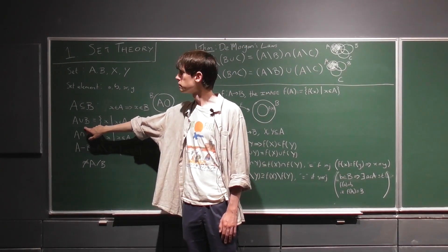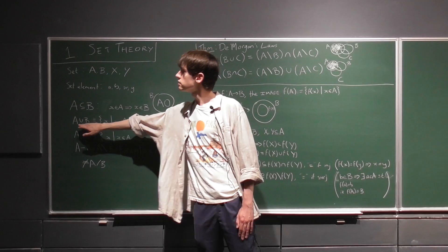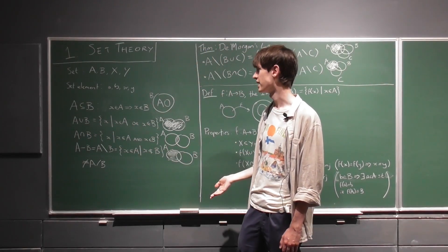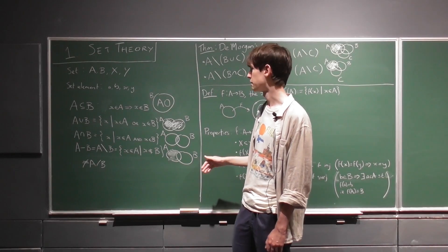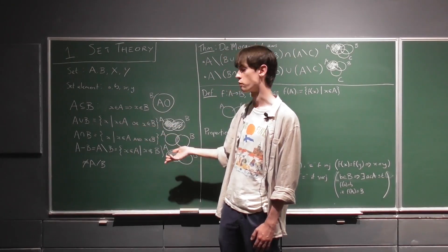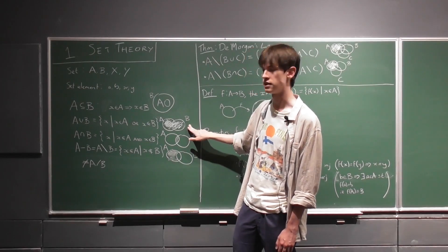This is the symbol for a union, so this entire set here would just be the set of all elements of A and elements of B. So each member element is either in A or B or both, and this is what its Venn diagram would look like.